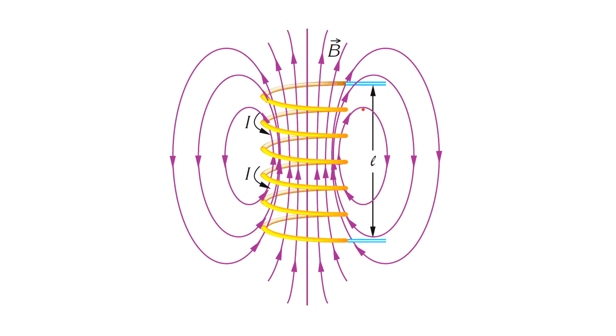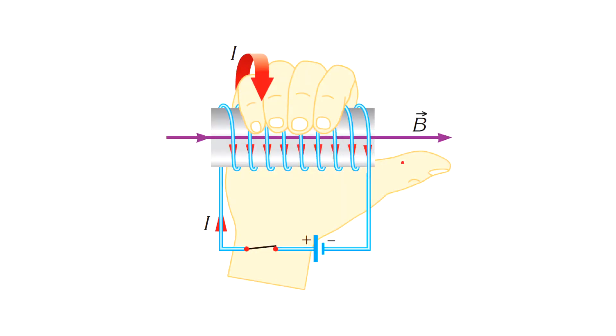The longer the coil, the weaker the field outside. An infinitely long coil will have zero field outside. The direction of the field inside the solenoid can be determined using the first right-hand rule.